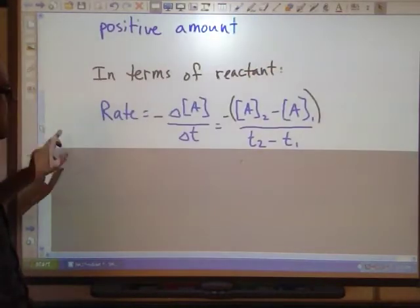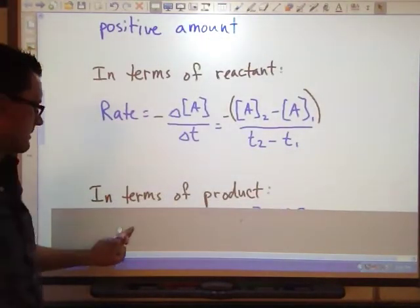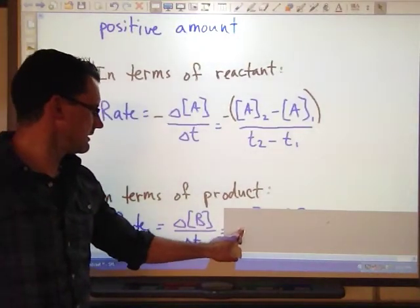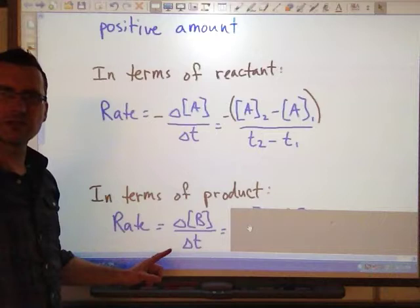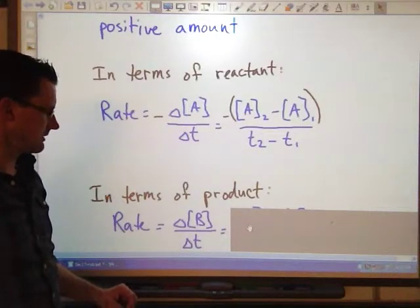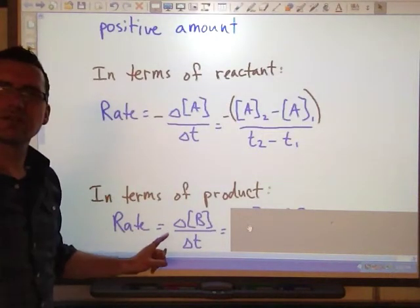Also, I could express it in terms of a product, product B. In this case, the change in concentration of B over change in T. Notice I don't have the negative here. I don't need it.